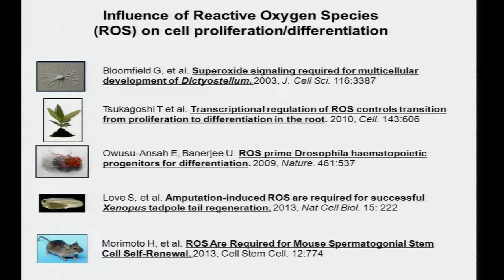What I want to broach today is this concept about reactive oxygen species—ROS—and their influence on cell proliferation and differentiation, and build the case that this is a very ancient, highly conserved mechanism by which numerous cell systems can stimulate growth and differentiation, as well as other signaling functions. ROS have been involved in differentiation and proliferation in organisms as simple as social amoeba, Dictyostelium, where superoxide signaling is necessary for fruiting body formation. In plant biology, ROS transcriptional regulation controls proliferation and differentiation as the root migrates to the microbial soil. Drosophila also shows differentiation of proliferation particularly in the hematopoietic lymph gland, and very recent papers in vertebrate systems—Xenopus tail regeneration and mouse spermatogenesis—also implicate ROS signaling.